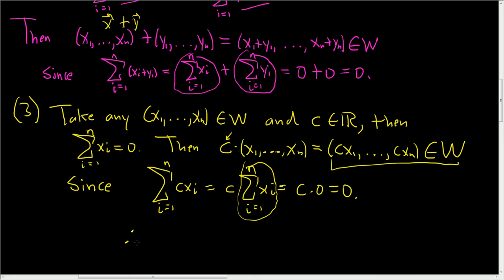That's exactly what it means for this vector to be in W. So we've shown all three conditions. So W is a subspace of R^n. And again, went pretty fast through this, but trying to keep the video length short. I hope that made sense.